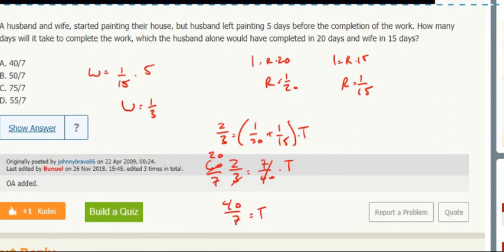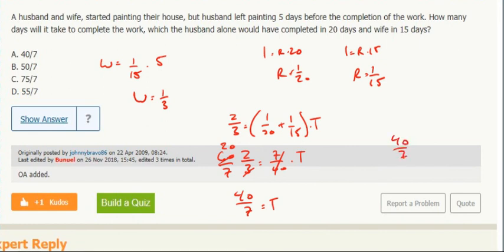So 40 over 7 is T. Now when they're asking how long in total did the job take, let's not forget her five days on there. So that's 35 over 7, so that's 75 over 7.